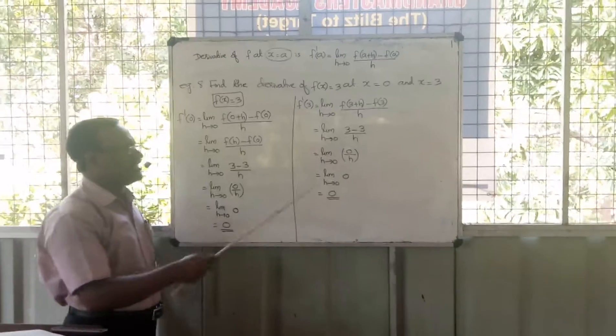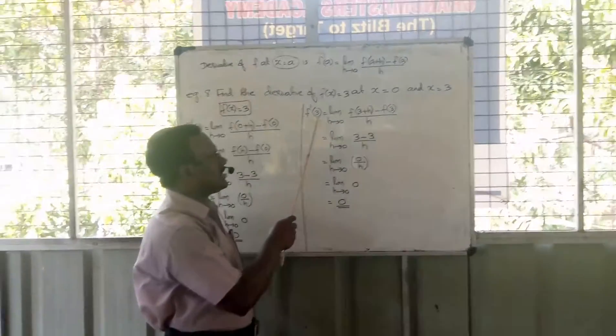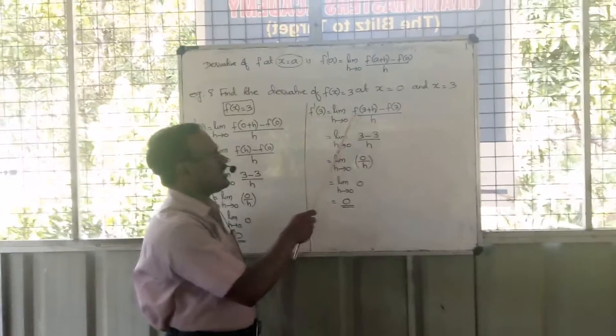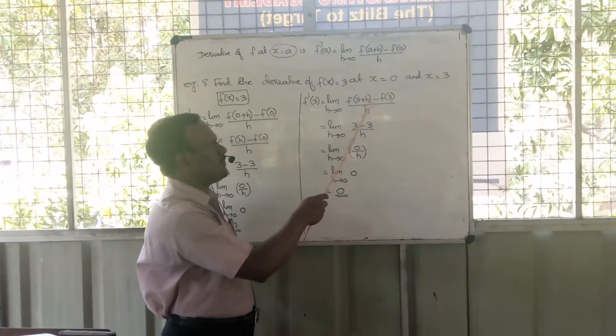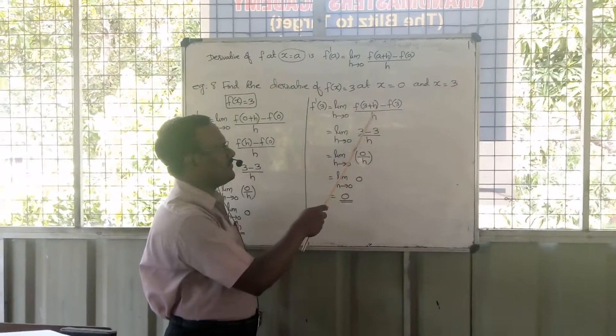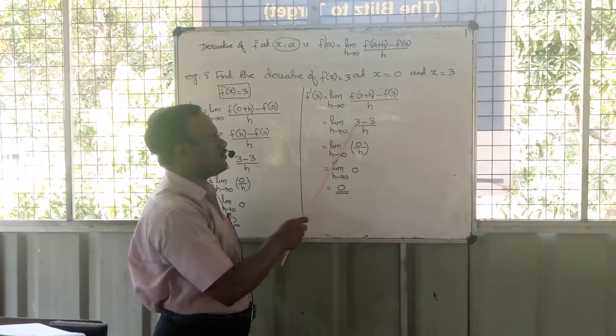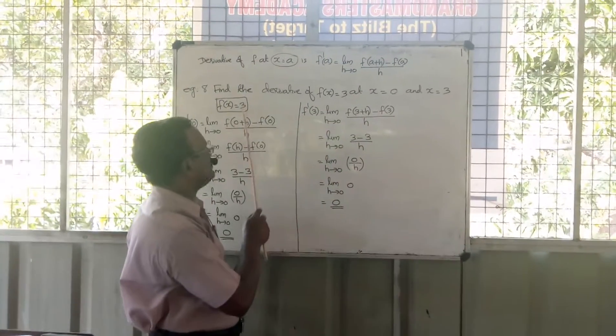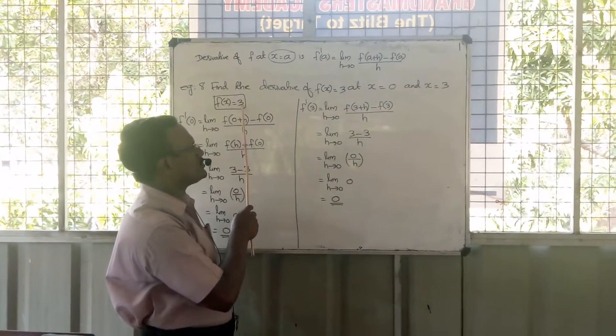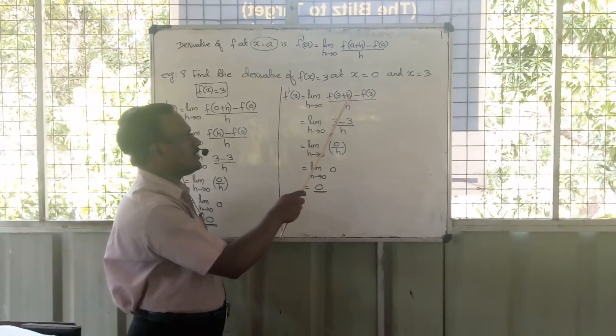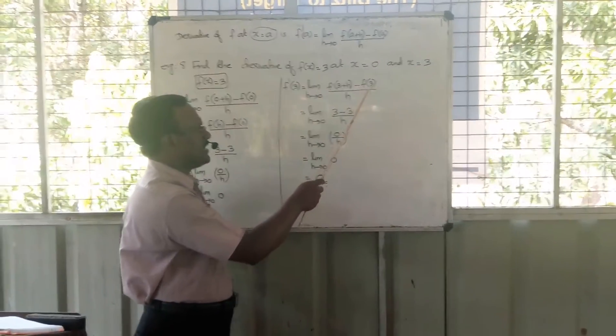Now f'(3). By definition, limit h tends to 0, f(3 + h) minus f(3) divided by h. Equal to limit h tends to 0. For the constant function f(x) = 3, both f(3 + h) and f(3) equal 3.